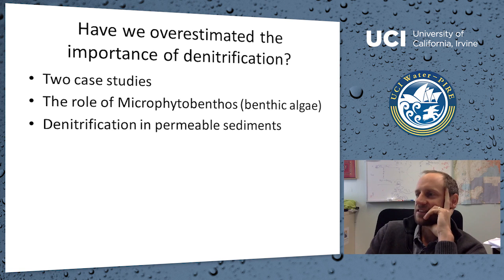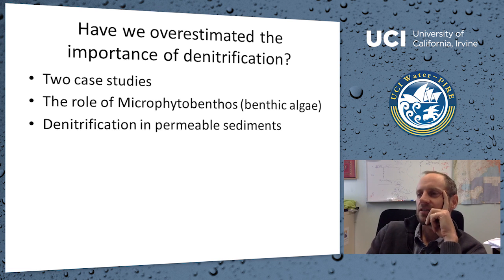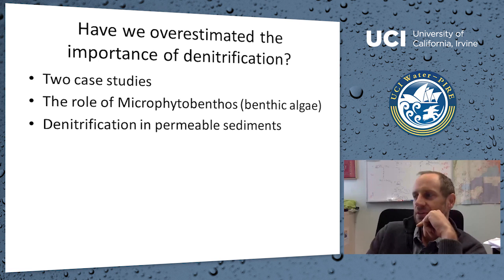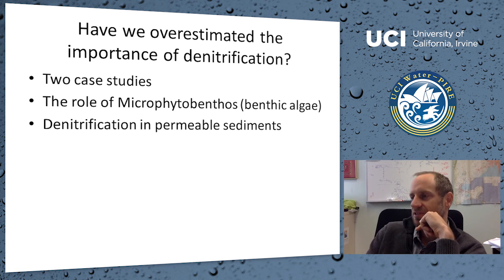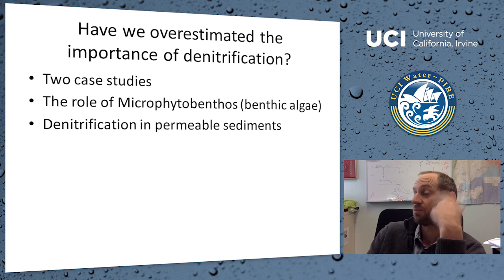I want to talk about two case studies. First, the role of microphytobenthos — microscopic algae that live on muddy sediments. You may look at a muddy sediment in shallow water and think nothing is growing there, but if you take that sediment and put it in acetone or ethanol it turns extremely green — there's a huge amount of algae on those sediment surfaces. Second, denitrification in permeable sediments — a focus of my research for the last 10 years, stemming from my postdoc at the Max Planck Institute for Marine Microbiology in Germany.